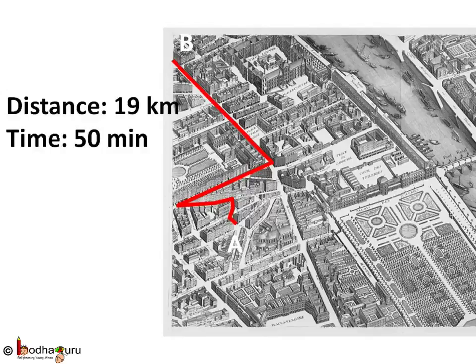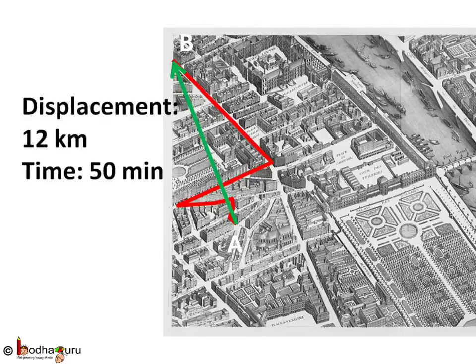Here you went from point A to B in 50 minutes and the distance covered was 19 km, but the displacement is just 12 km in the north-west direction. So always remember: distance is the total length of the path that the object took, but displacement is the measure of the straight line between initial and final position. Distance is a scalar quantity, whereas displacement is a vector quantity — you need to mention in which direction the displacement has happened.